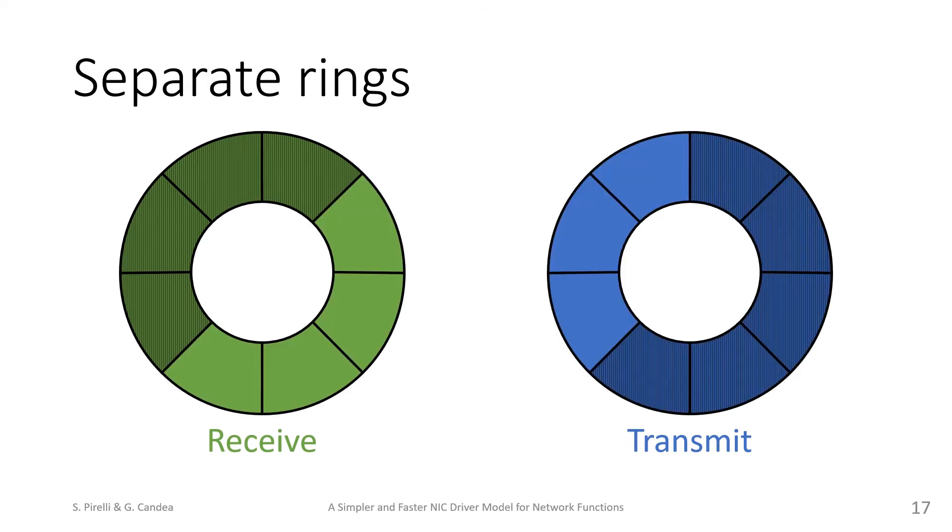The transmission ring works in the same way, with buffers to transmit or who have finished transmission. Usually, the reception and transmission rings are unrelated. But in our model, the two rings contain the exact same buffers, except that a given buffer cannot be used for both reception and transmission at the same time. There is no overlap between rings.